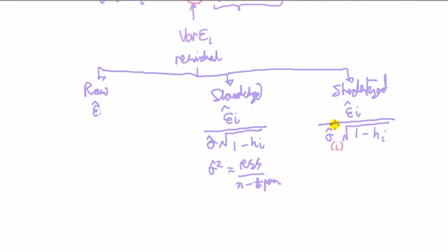This is that you estimate the model, but with the i observation omitted, and you fit your model, and then you obtain the estimate of the variance.